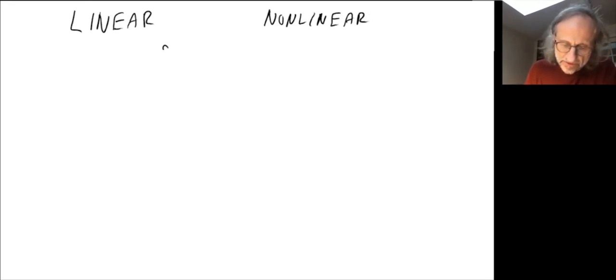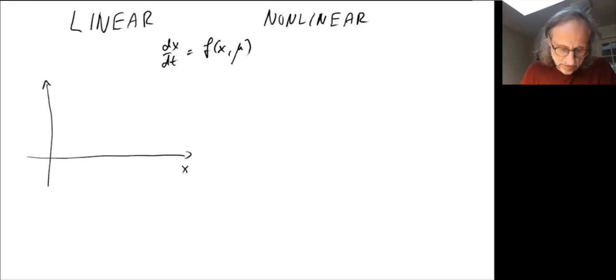So imagine we have a differential equation dx by dt is equal to f of x and mu. And mu is a control parameter that we can change. And so in the linear case, if I plot f of x and mu, it may look like that.